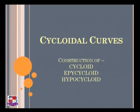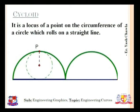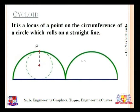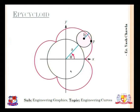The first topic is cycloidal curves — specifically cycloid, epicycloid, and hypocycloid. A cycloid is traced by a point on a circle or wheel as it rotates along a straight curve. On the slide, you can see a straight blue line and a dotted circle with point P on it. The green curve traced by point P as the circle rolls along the line is known as a cycloid.